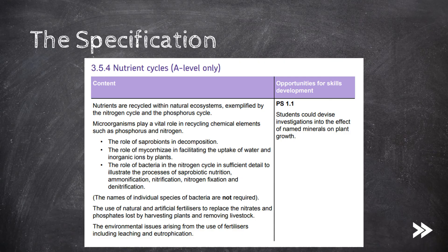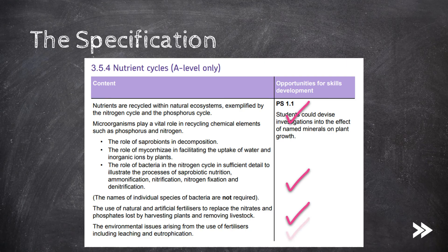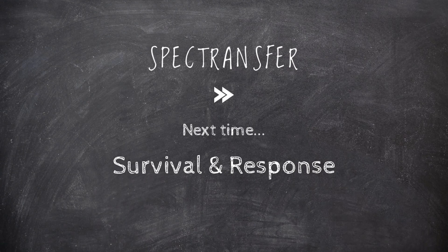So that would be nutrient cycles covered. We've had a look at the nitrogen and phosphorus cycles, the action of saprobionts in decomposition, as well as how they are involved in various stages of the nitrogen cycle in particular. We've covered mycorrhizae and how they form a mutualistic relationship with plants. We have covered natural and artificial fertilisers and how they replace lost mineral ions. Finally, we considered environmental issues arising from the use of fertilisers and how they can result in leaching and eutrophication. That would be it for now guys, thanks for watching, please subscribe and comment — next time we'll be covering survival and response.